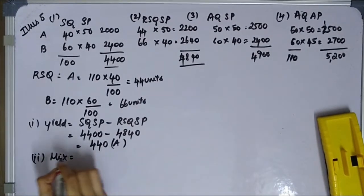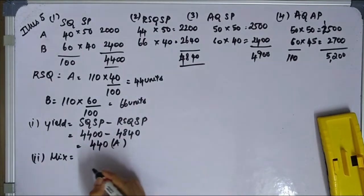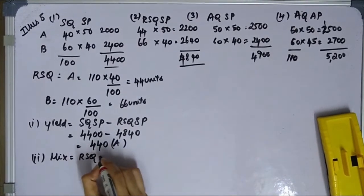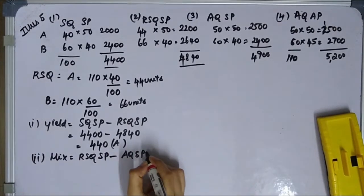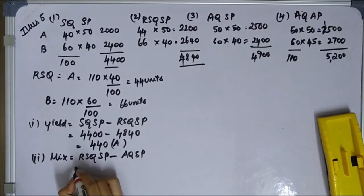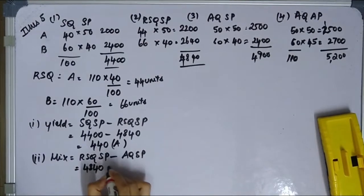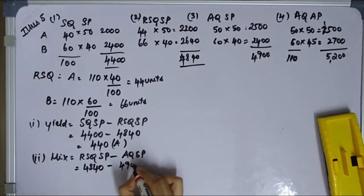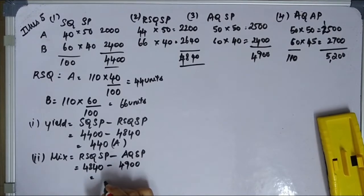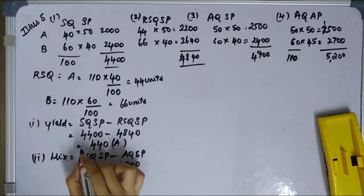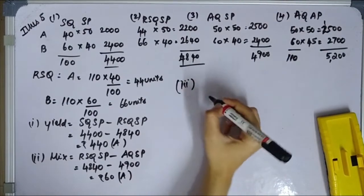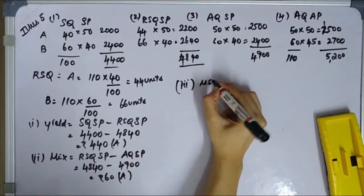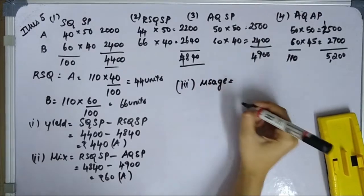Second variance: Material Mix Variance = RSQ×SP minus AQ×SP = 4,840 minus 4,900 = 60 rupees Adverse.